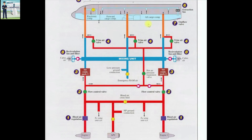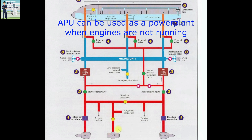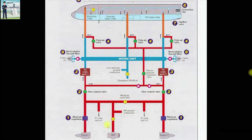Let us understand the air conditioning system of the A320 with the help of this schematic diagram. The first question that comes to mind is: where is this air coming from? When the doors of the aircraft are closed, it becomes a sealed system. The answer is it comes from the bleed of the engines when the aircraft is in the air, and from the bleed of the APU when the aircraft is on ground. The APU is essentially a small engine at the tail section of the aircraft which does not provide thrust but provides electrical and pneumatic supply.